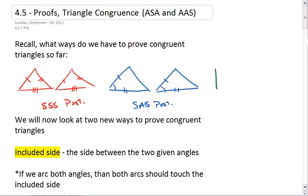And lastly, if we're looking at right triangles, we have hypotenuse leg.